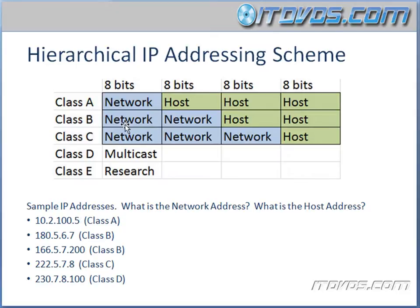For Class B addresses, the first two octets are the network address, and the next two octets are the host address. For Class C, the first three octets are the network address, and the last one is the host address. For the Class B address 180.5.6.7, the 180.5 is the network address and 6.7 is the host address. For 166.5.7.200, the 166.5 is the network address and 7.200 is the host address. For the Class C address 222.5.7.8, the 222.5.7 is the network address and just the 8 is the host address.